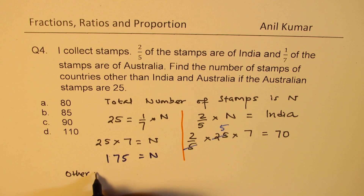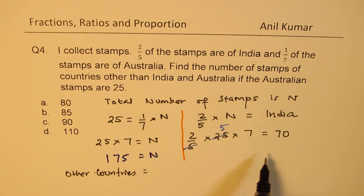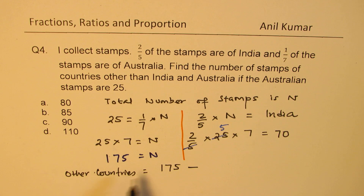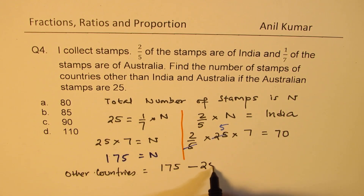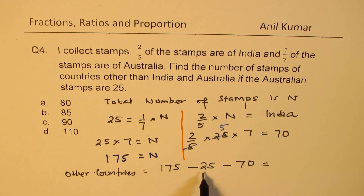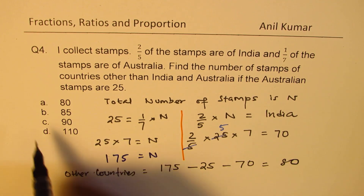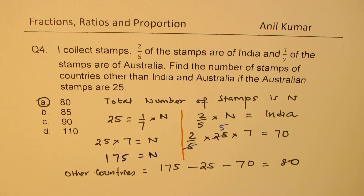Now we can find stamps of other countries: total minus Australia minus India. That is 175 minus 25 minus 70. 175 minus 25 equals 150; 150 minus 70 equals 80. So the answer is 80, which is option A. I hope that helps you understand how to solve such multiple choice questions involving fractions.